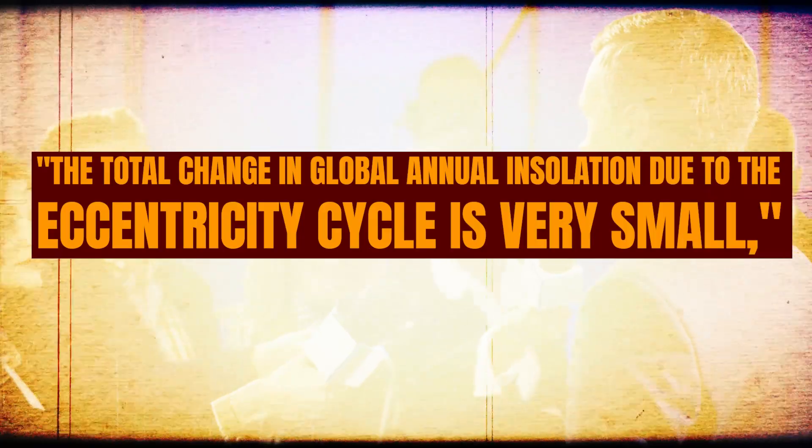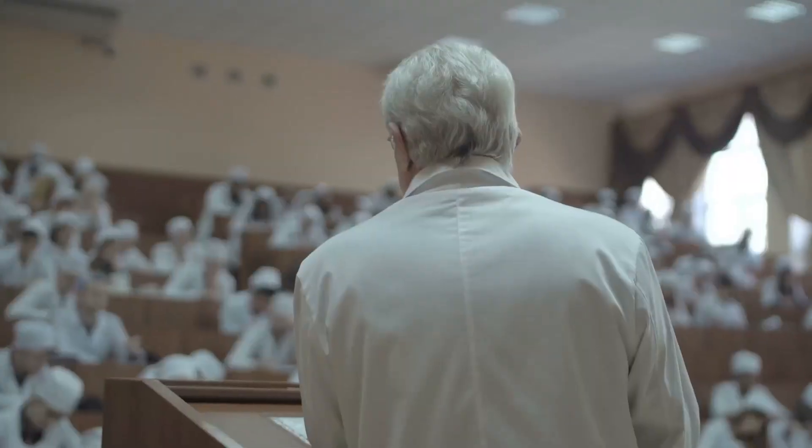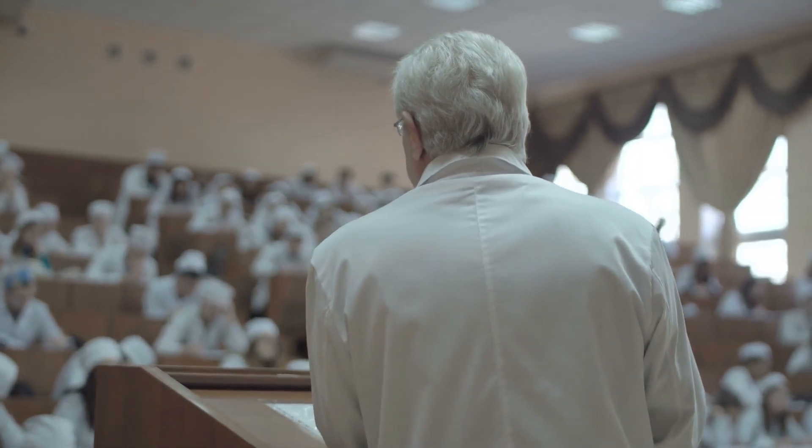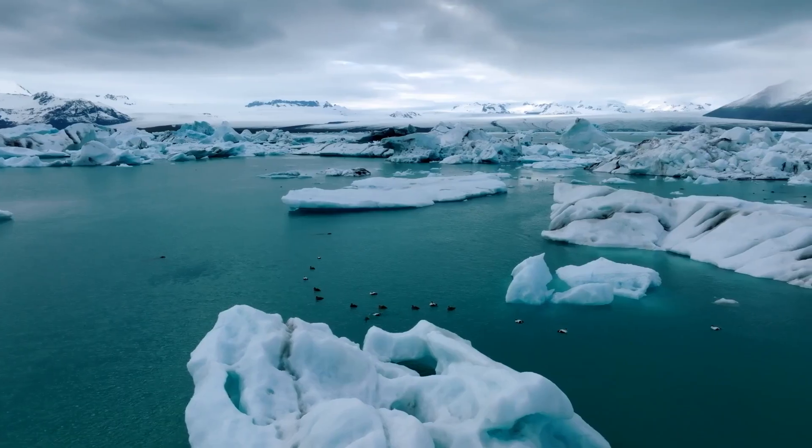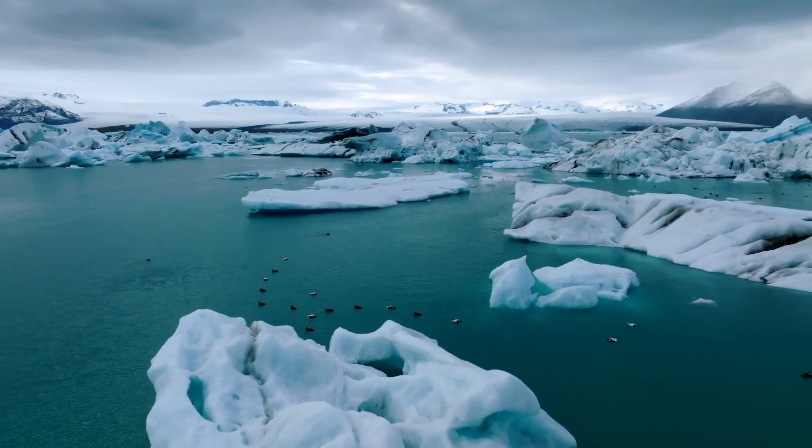Alberto Maliverno, a geophysics professor at Columbia University, told Space.com that the total change in global annual insolation due to the eccentricity cycle is very small. It is a very minor factor in annual seasonal climate variations but starts making a difference over long time scales.